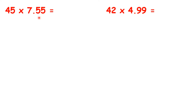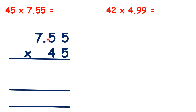We need to work out 45 times 7.55. So we can set out our multiplication like this. You might notice that here we don't have our place values lined up — we have units under hundredths and tens under tenths. But that doesn't matter, as long as you remember that if there are two decimal places in the question, there will be two decimal places in the answer. So we can write decimal points in line with the decimal point we have in the question.